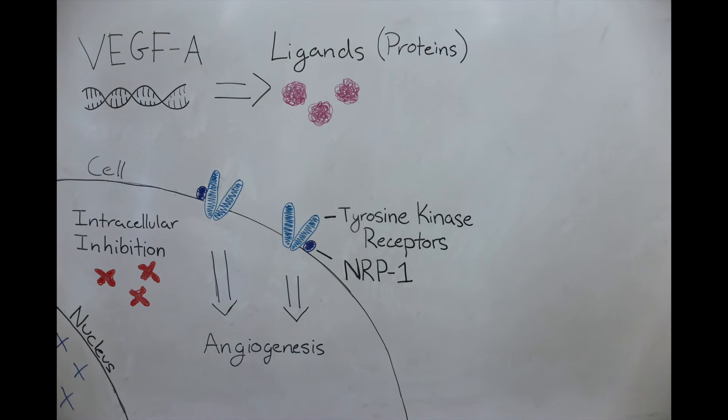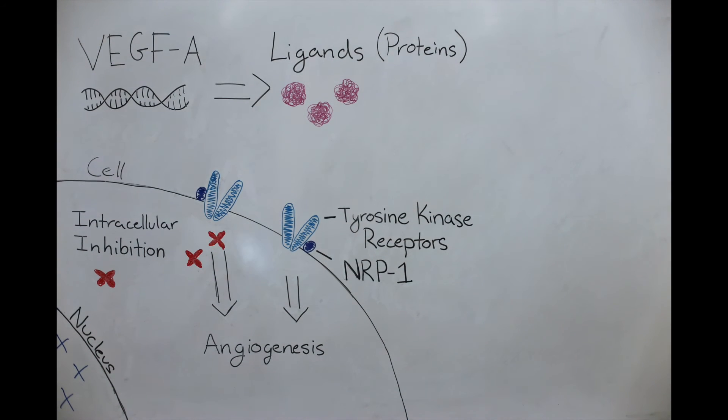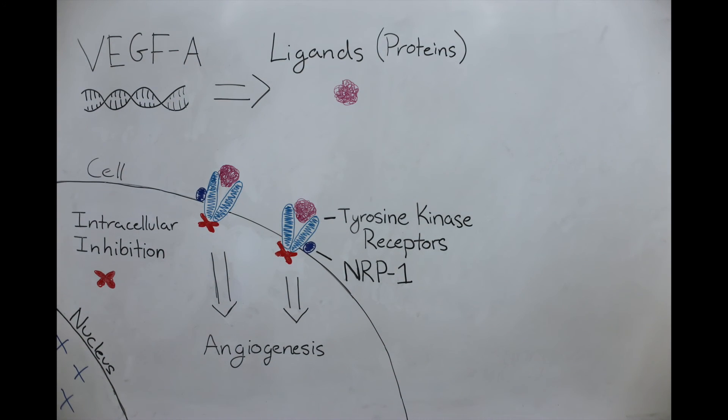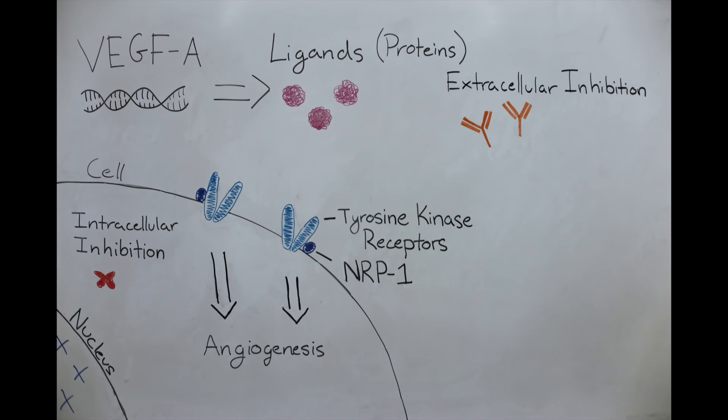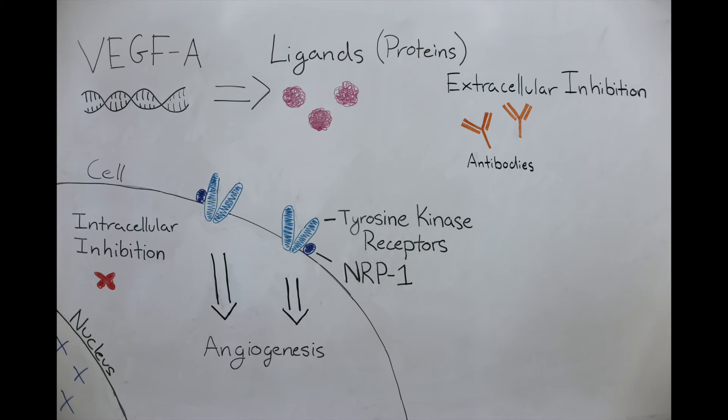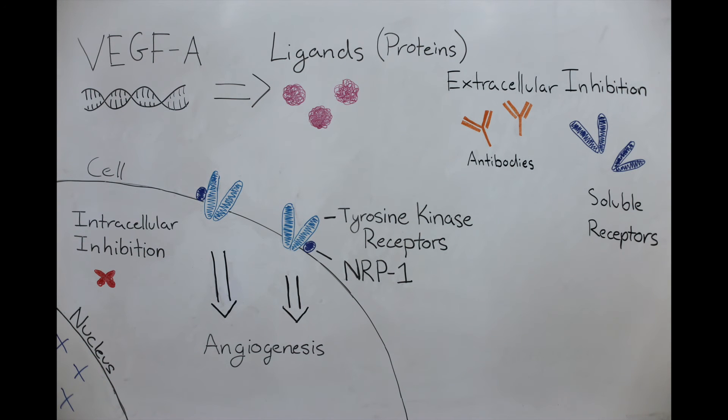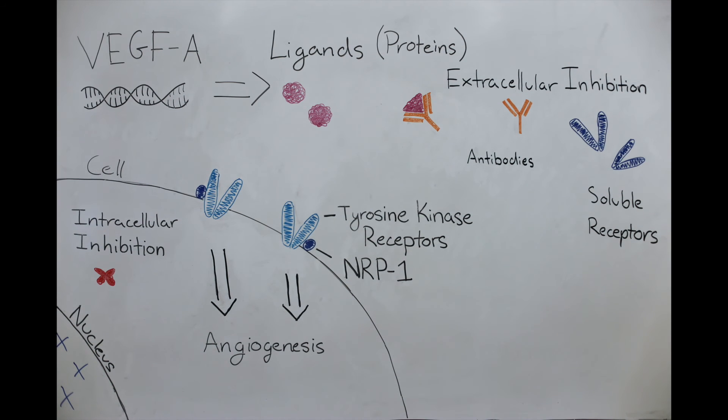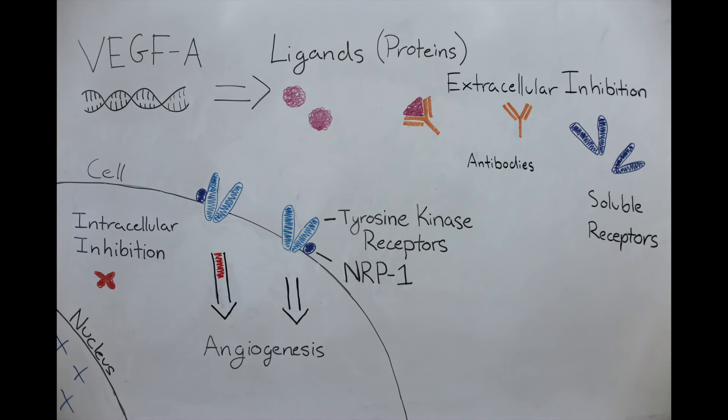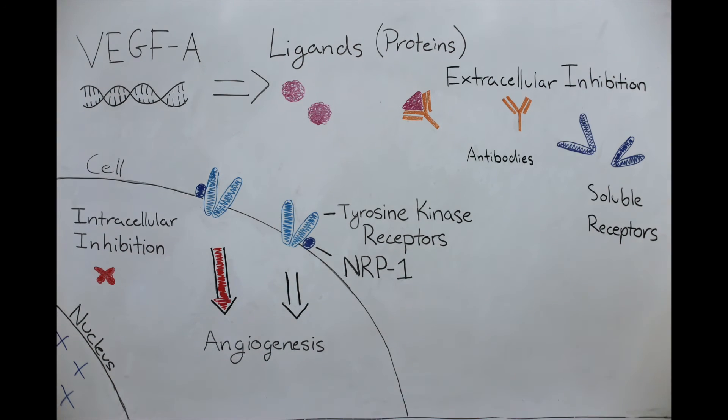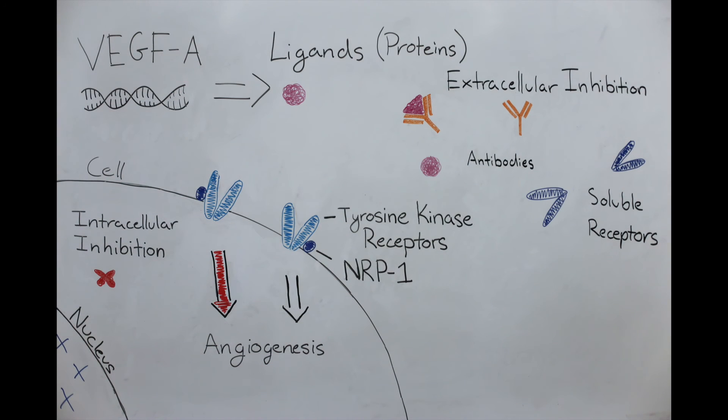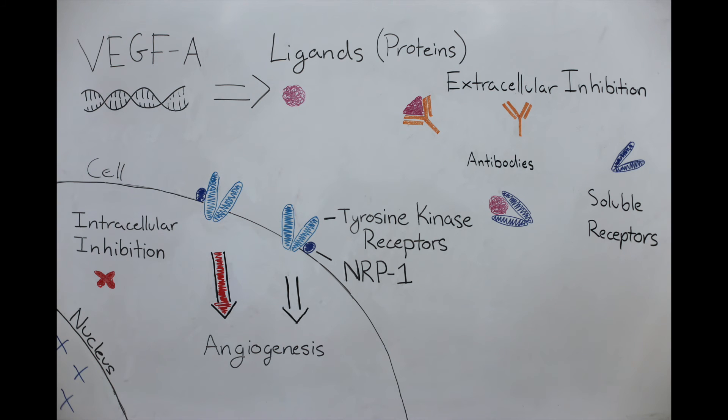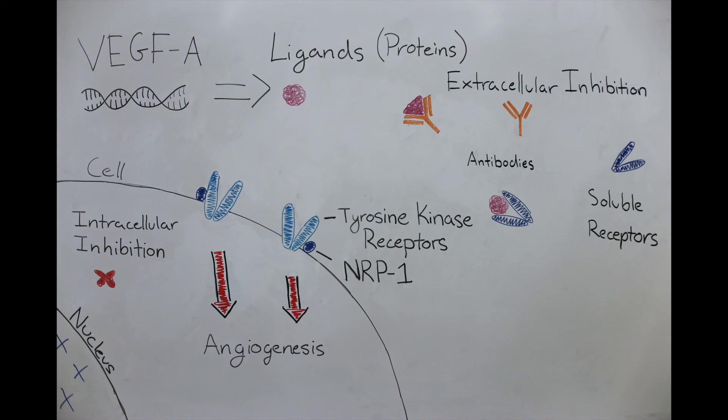Intracellular blockage of the pathway is performed by proteins called tyrosine kinase inhibitors that block the receptors from launching the signaling cascade. Extracellular inhibition of the VEGF pathway targets either the VEGF-A ligand or the cell surface receptors. Some anti-cancer drugs send small proteins called antibodies to areas of the body with cancerous cells. Other drugs send soluble receptors to the cancerous cells. The antibodies attach to the ligand, changing the ligand's shape, preventing it from attaching to the receptor. Other anti-cancer drugs send imitation-soluble receptors to trick the ligands into binding to them rather than to the real receptors. This stops the signaling cascade from starting too much angiogenesis.